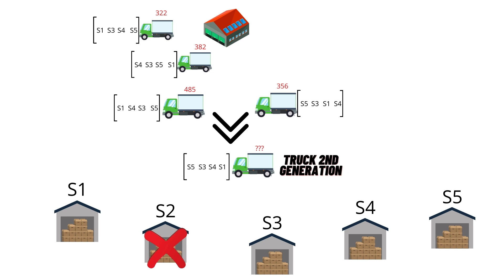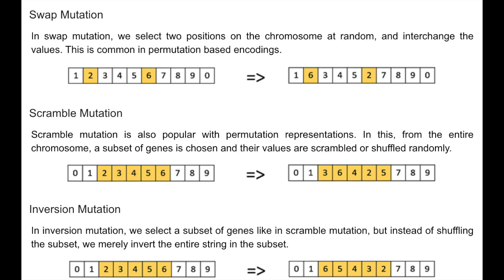After the crossover operation, there is something else that can happen with a certain probability: a mutation of the genes. There are three mutations used in this work, each with equal probability — the swap mutation, the scramble mutation, and the inversion mutation. The swap mutation is simple: you grab two genes randomly and swap them. The scramble mutation takes a string of genes inside the chromosome and changes their order randomly. Finally, the inversion mutation grabs a random string inside the chromosome and inverts it.